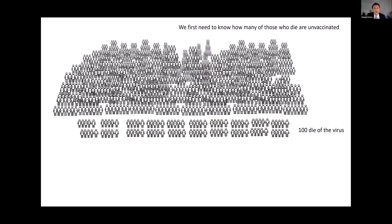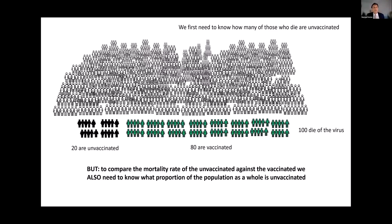First we have to know how many of those who die are unvaccinated. We'll suppose that it's 20, which means 80 vaccinated die. But to compare the mortality rates, we need to know the proportion of the whole population who are unvaccinated.